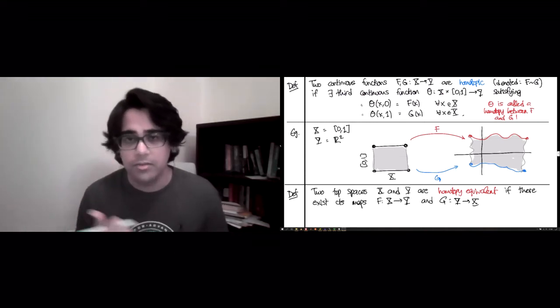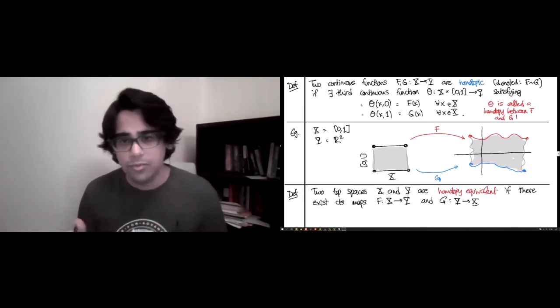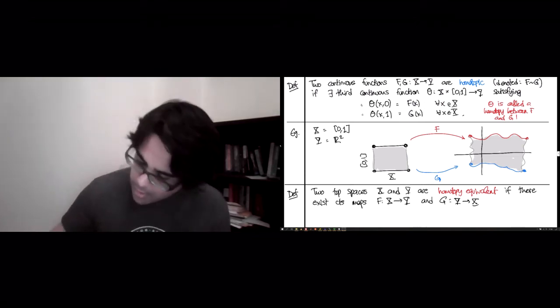Which is very different from what the two continuous maps in the definition upstairs were doing. They're both going in the same direction from X to Y. Here, f goes forward and g goes backwards. So there exist continuous maps, one forward, one back, satisfying two conditions.